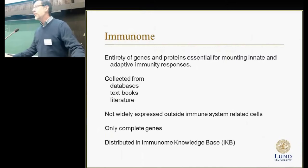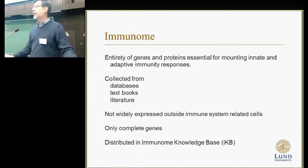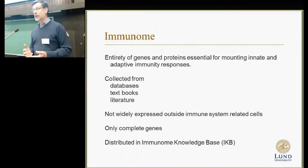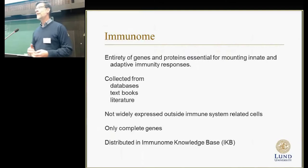By immunome, we mean the entirety of the genes and proteins that are essential for the immune system. The immune system is really a bunch of different mechanisms, reactions, and processes which during evolution have been utilized for protecting organisms. It covers lots of different molecules, different cells, even tissues. We wanted to have an idea of what all this is combined — what is immunome.